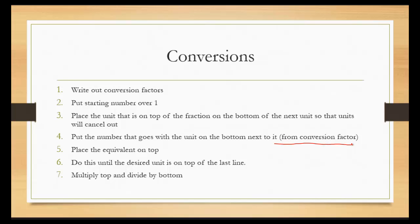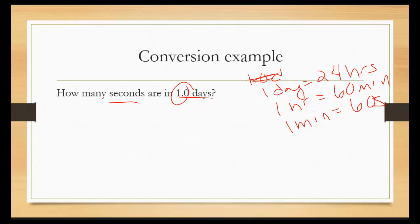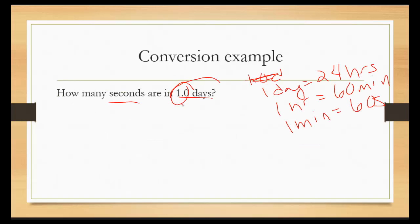Where you're going from is on the bottom. Where you're going to is always on top. So let's take an example of this. We're going from how many seconds are in 1.0 days. I did this 1.0 so that way we can have the correct significant figures. So let's write out our conversion factors first. So we're trying to get to seconds. So in 1.0 days, in 1 day, we know that there's 24 hours. Then we know 1 hour is equal to 60 minutes. And then from here we know that 1 minute is equal to 60 seconds. So now that I have my conversion factors, we put our starting number over 1. Our starting number is 1.0 days.